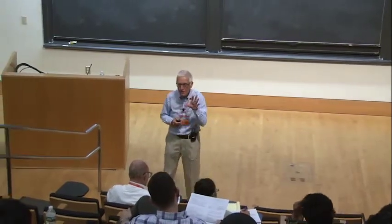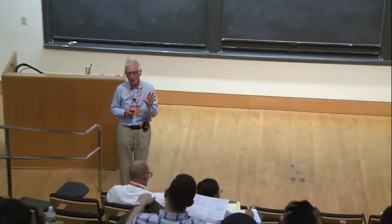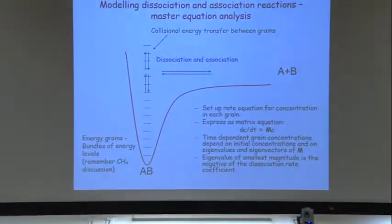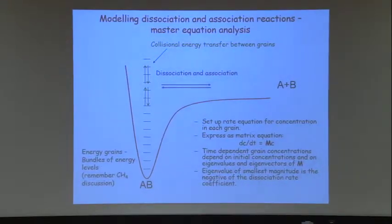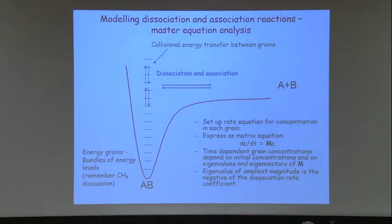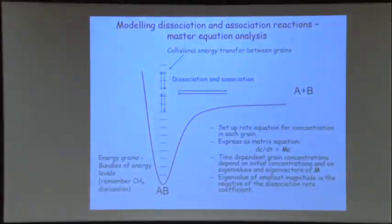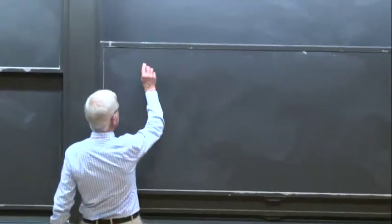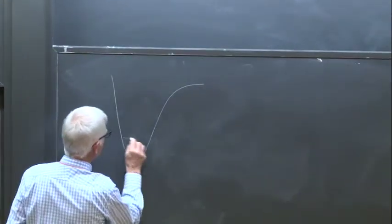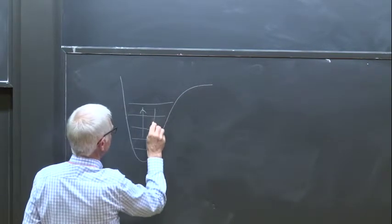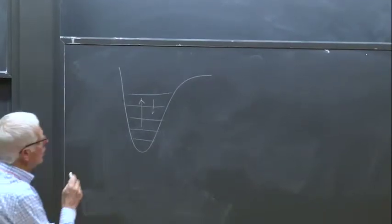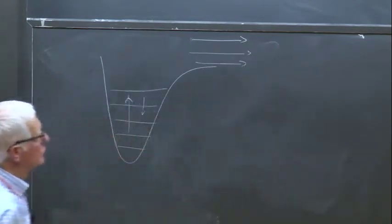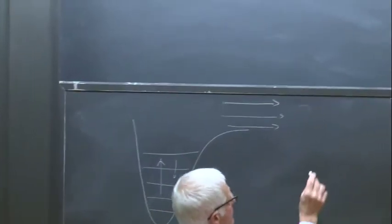The rate constant corresponds to minus the smallest magnitude eigenvalue — all eigenvalues are negative because the system is decaying. The smallest magnitude eigenvalue corresponds to the rate constant, while all other eigenvalues correspond to collisional energy transfer between the different grains. Those are all larger in magnitude than the smallest eigenvalue. They describe the evolution of the population of the energy grains due to energy transfer, looking at energy transfer in upward and downward directions, which generates a steady state from which the molecules react.